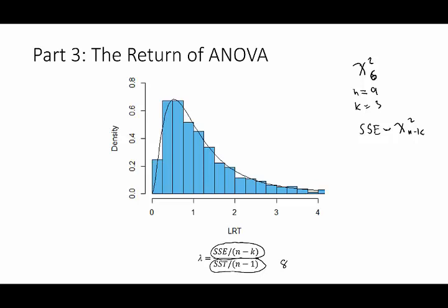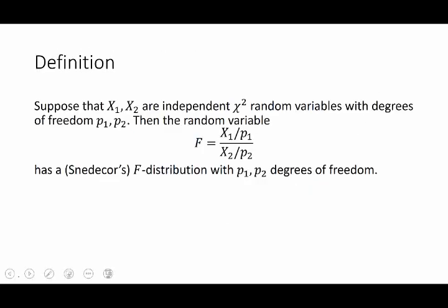You can see that the result is this right-skewed distribution, and this black curve is the correct descriptor of this distribution, which we're going to call an F distribution. It has two degrees of freedom parameters: a degrees of freedom for the numerator, which in this case would be six, and a degrees of freedom for the denominator, which in this case would be eight.